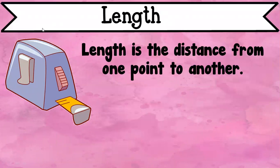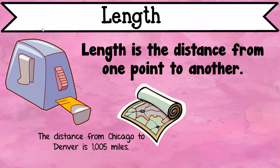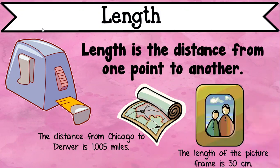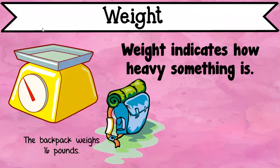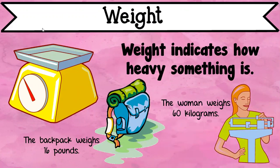Let's start with length. We know that length is the distance from one point to another. Here are a couple of examples: you can measure the distance from one place to another using miles, and you can also measure something smaller like the length of a picture frame using inches or centimeters. Another thing we're going to be looking at today is weight. Weight indicates how heavy something is — for example, a backpack weighs 16 pounds and a woman weighs 60 kilograms.